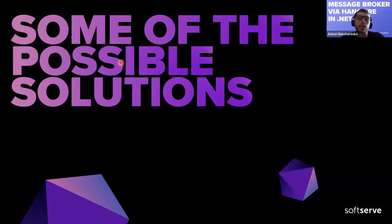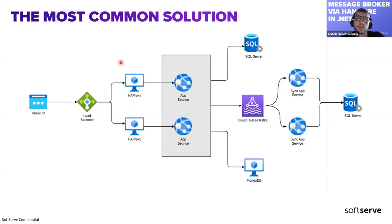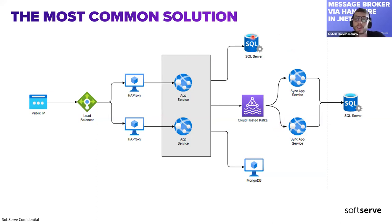Some possible solutions: the most common case is to introduce deployable services such as a sync app service, where the main core application communicates via message brokers like RabbitMQ, Kafka, or Azure Storage Account. We could also divide SQL servers into multiple instances for the sync service. But this was too complicated and was declined by our client.